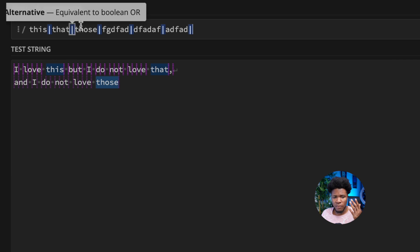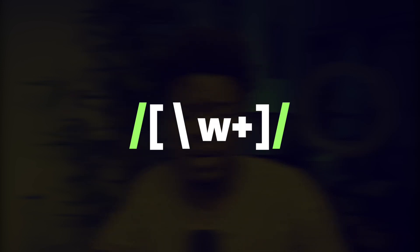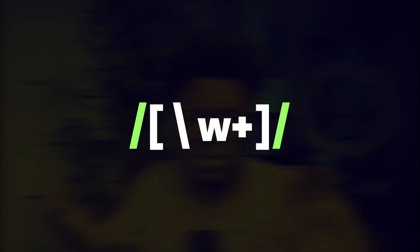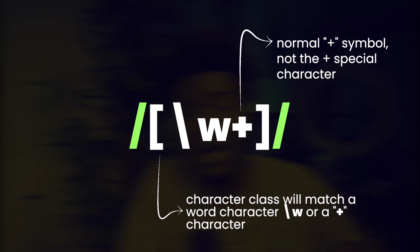The regex engine will match any of these characters where you use alternation. One thing you notice is that alternation looks similar to character classes — character classes also allow you to specify a 'this or that' character. The difference is that character classes only allow you to provide individual characters; they do not allow you to provide other expressions like groups or quantifiers.